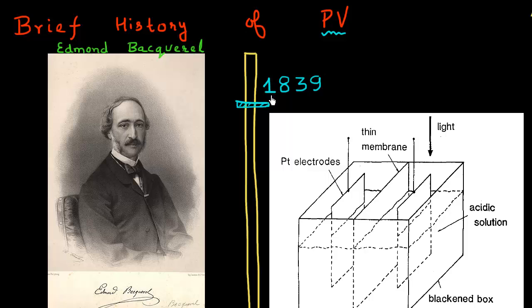So the very first photovoltaic effect, the very first observation of photovoltaic effect, the discovery of the photovoltaic effect was done in 1839. And it's credited to this gentleman, Edmund Becquerel, who was a French physicist. And he was a child prodigy as well. And at the age of 19, while working with his father, he discovered this photovoltaic effect.